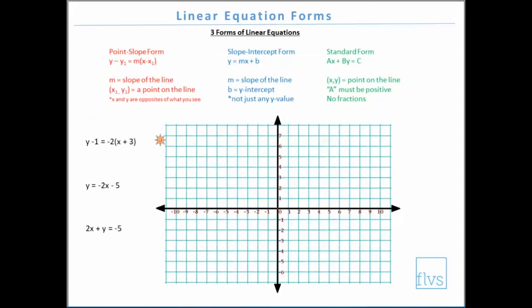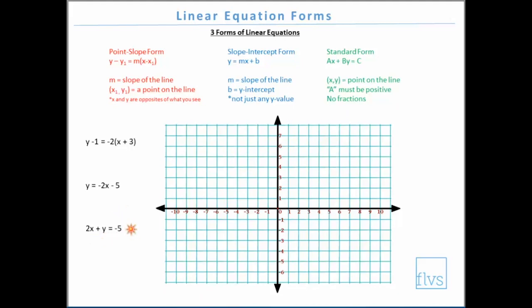All three of these equations are the exact same line — they're just in different forms. Notice point-slope form looks like that format, slope-intercept form shows y = mx + b, and standard form has x and y on the left-hand side with a number by itself on the right. It follows the rules: a is positive and there are no fractions.